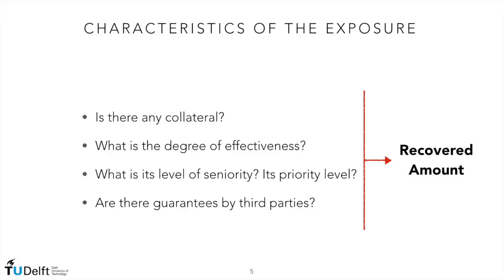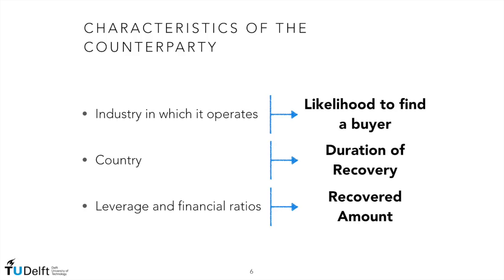If we consider the characteristics of the exposure, we ask: Is there any collateral? What is the degree of effectiveness — that is, how easily can the exposure be liquidated? What is the level of seniority and its priority level? Are there guarantees by third parties? Different answers to these questions lead to different recovered amounts; a collateral always guarantees a higher recovery rate. Talking about the characteristics of the counterparty, it is important to know the industry it belongs to, as this can influence the likelihood of finding a buyer for the defaulted company and the price at which it is likely to be sold.